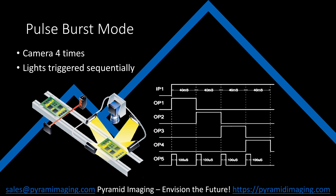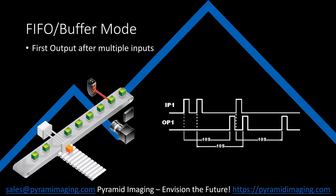Pulse burst mode allows you to set the number of times you want an output triggered after receiving an input. And finally, we can see an example with a reject gate. As you can see from the graphic, multiple triggers will occur before the first output needs to occur. Buffer mode allows the CC320 to keep track of when to fire each output.